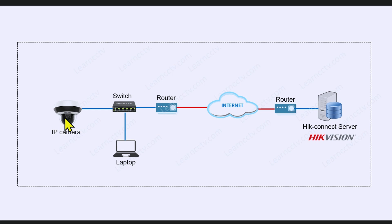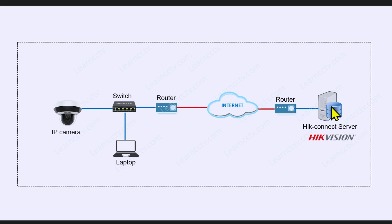Let me explain with a diagram. I have the IP camera connected to a switch, to a router, and on the other side across the internet I have the HiK-Connect server. Your camera's packets need to leave the network, cross the router, go to the internet, and hit the HiK-Connect server to communicate. The router is the gateway to the internet — you need to tell the camera to forward all packets destined for the internet to the router. The same applies for a computer: my laptop has internet access because its gateway is set to the router.